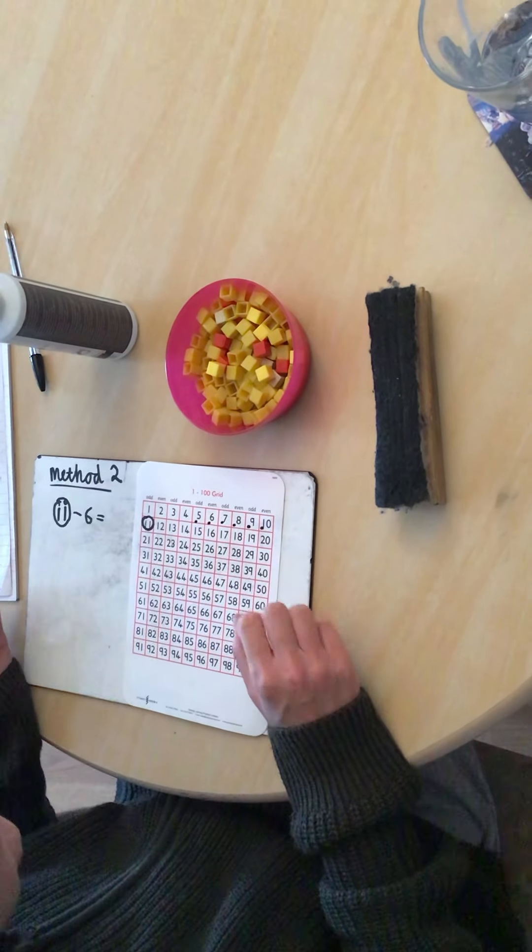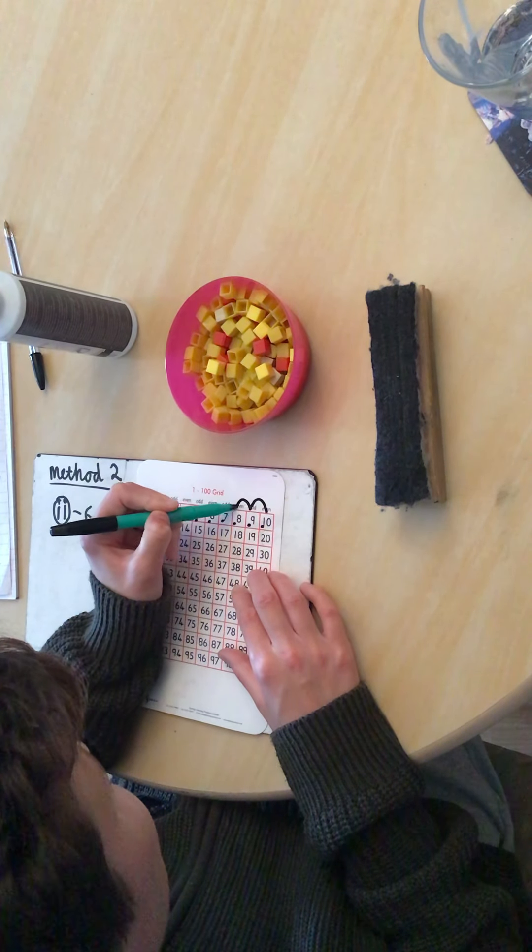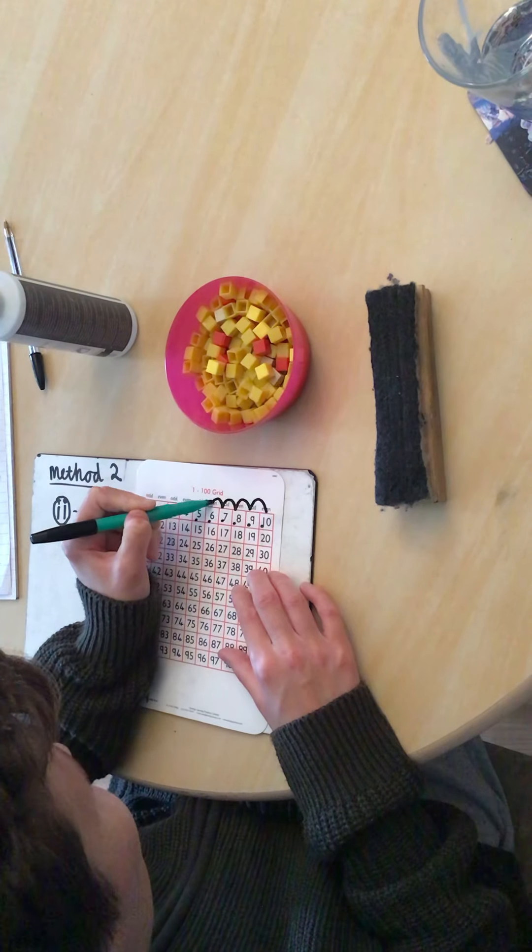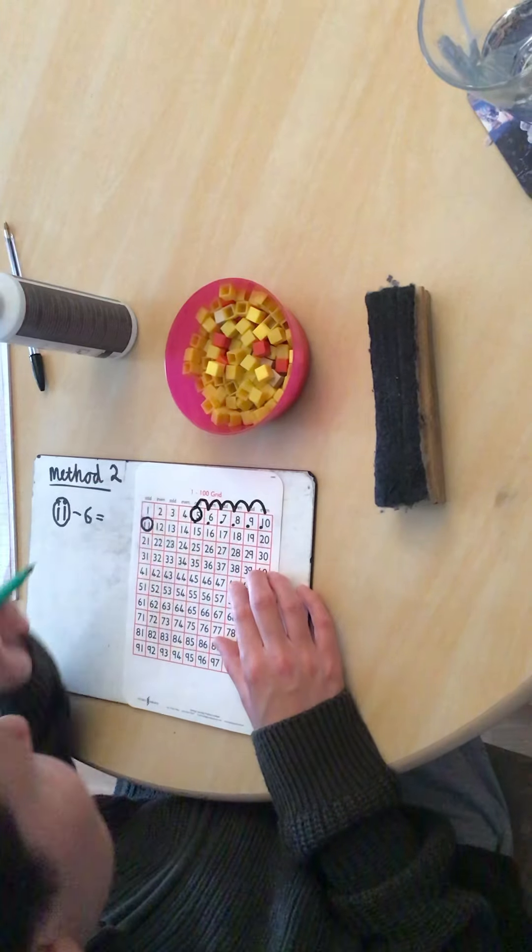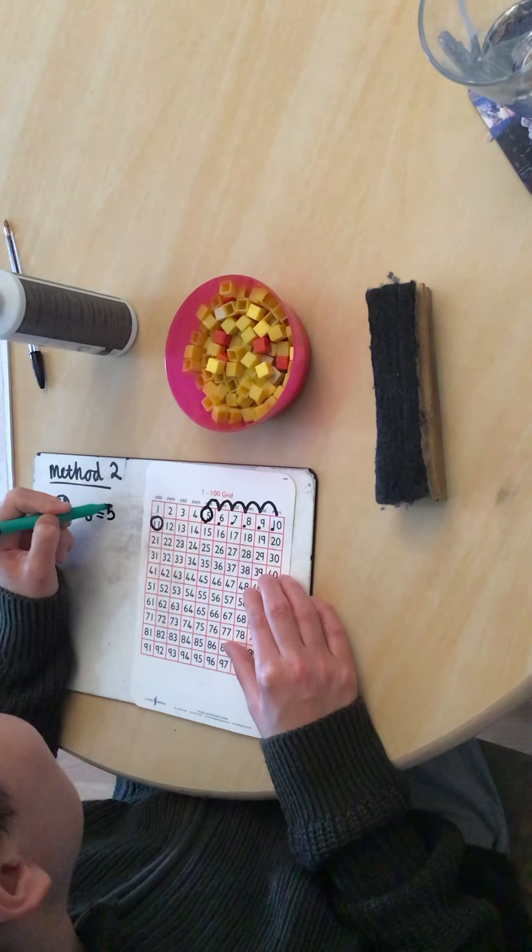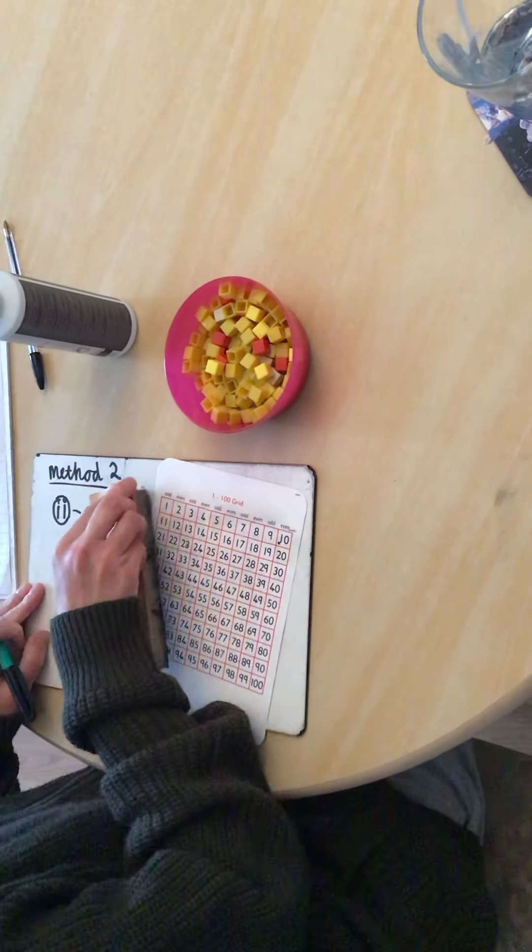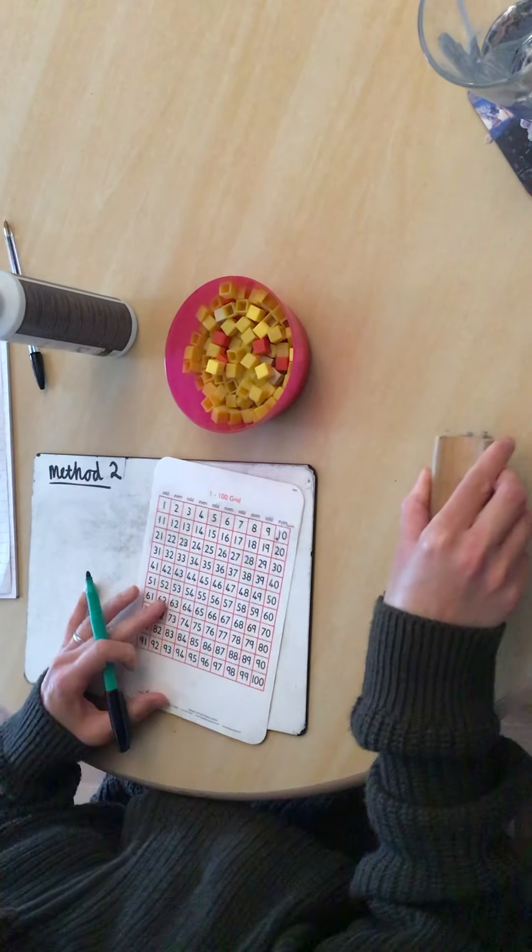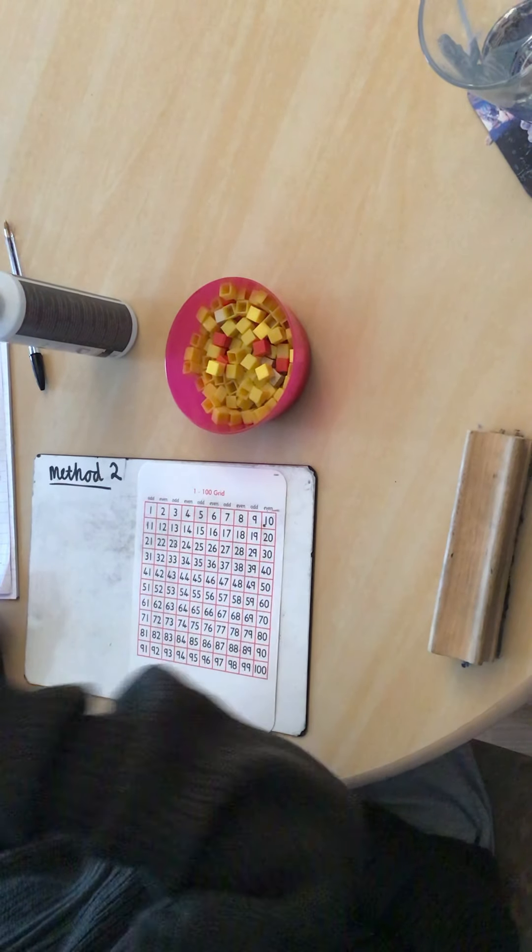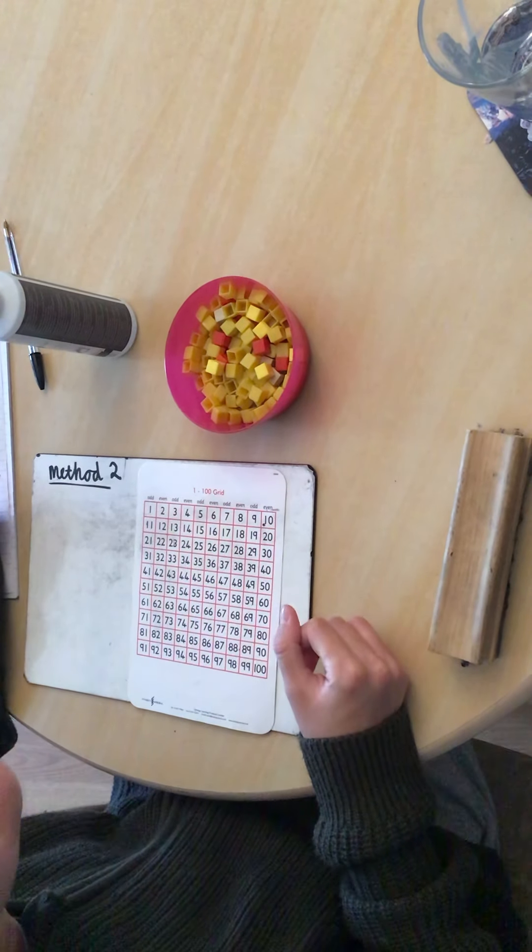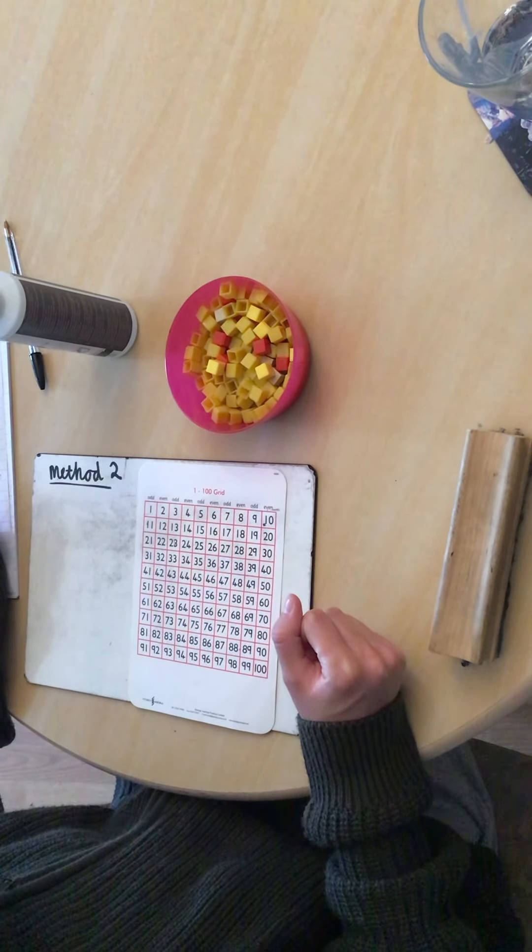And I can always dot it to help me or do number lines as well. So I've got 11 and I can go 1, 2, 3, 4, 5, 6. I've taken away 6. Or I can do my number lines. So I can go 11, take away 1 is 10, 2, 3, 4, 5, 6. 11 take away 6. I finish at 5. I know my answer must be 5.